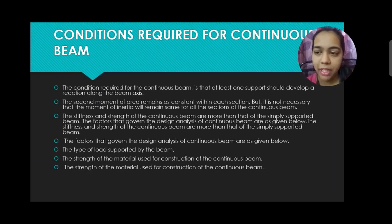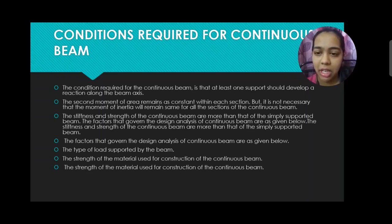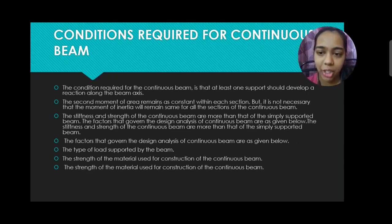The factors that govern the design analysis of continuous beam are as given below: the type of load supported by the beam, and the strength of the material used for construction of the continuous beam.